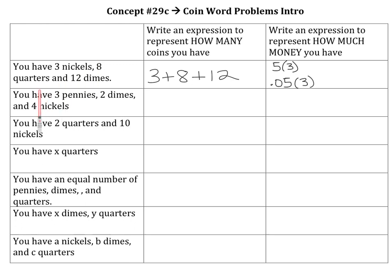Now if you have eight quarters — quarters are worth 25 cents — so you add 25 times eight. If you do 25 times eight, that tells you how much money you have in quarters. You could also say 0.25 times eight. And then the last one, you have 12 dimes. Dimes are worth 10 cents, so you do 10 times 12. If you want it in dollars, it would be 0.10 or 0.1 times 12.